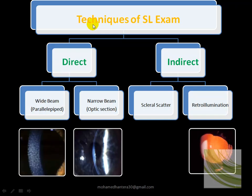This is a very important topic: techniques of slit lamp examination. Part of the clinical exam evaluates how you use different methods of this important machine in the ophthalmology clinic. There are two arms of the slit lamp — one with the binoculars called the viewing arm, and the other with the light and mirror, called the illuminating arm. When both are at the same angle of zero, this is called direct illumination, and with a wide beam it is called a parallelogram, which is useful for scanning the whole cornea to search for pathology.